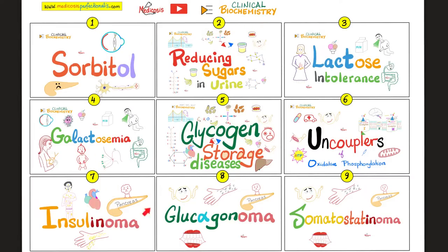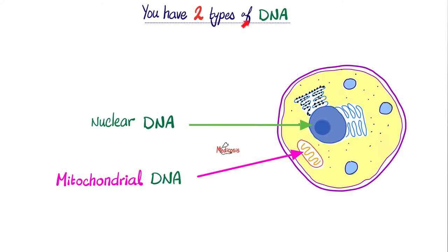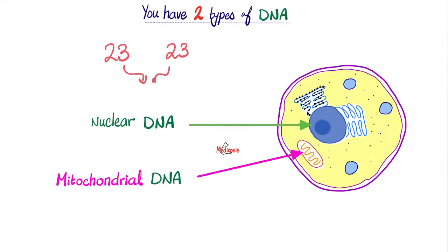Please watch the videos in this clinical biochemistry playlist in order. Remember, you have two types of DNA: the DNA that's in the nucleus, and mitochondrial DNA in your mitochondria. Where did my nuclear DNA come from? Half of it from mommy and half of it from daddy, because the ovum had 23 chromosomes and the sperm had 23 chromosomes, and now your nucleus has 46 chromosomes. Where did I get the mitochondrial DNA from? You got 100% of it from your mother alone, because your daddy left his tail outside.